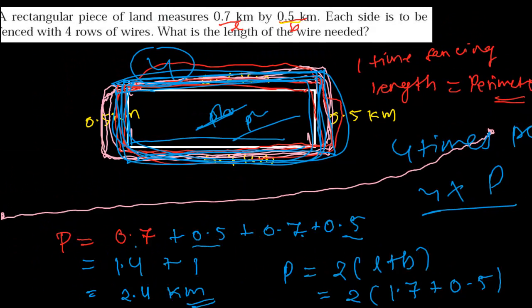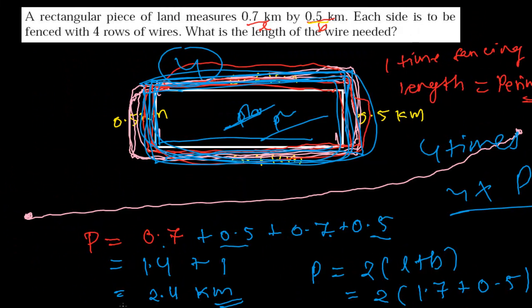It's all about the perimeter. You should know how to find the perimeter and what exactly perimeter is. Perimeter is just the sum of all boundaries. We solved this problem, and similar types of problems you will be getting — try to solve all those problems. I hope you have a very good concept of perimeter now.